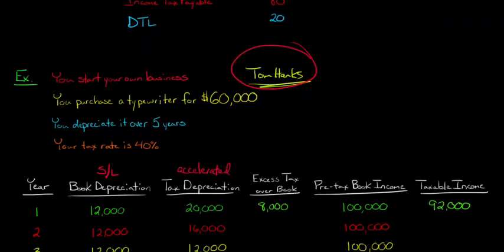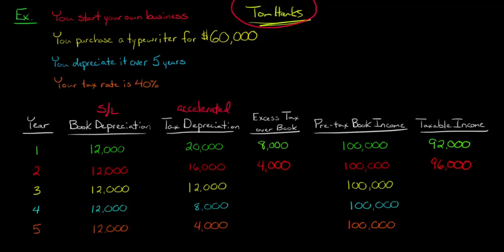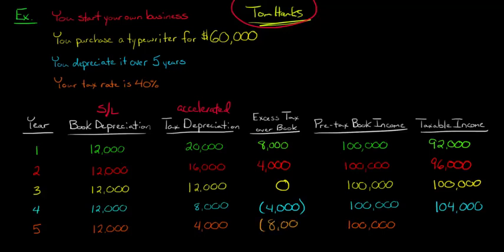In year two, book depreciation is still $12,000 straight-line, tax depreciation is $16,000, so excess tax over book is $4,000, and taxable income is $96,000. In year three, there's no excess, so taxable income and pre-tax book income are exactly the same. In year four, it reverses — you're now taking less tax depreciation than book depreciation, so taxable income is higher. In year five, tax depreciation is $8,000 lower than book, so taxable income is $108,000.